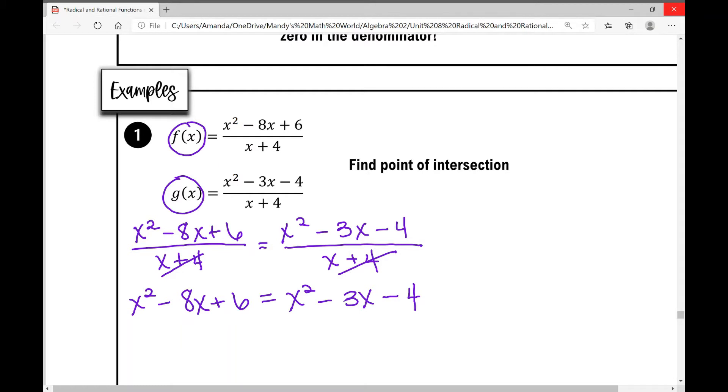So for example, if you had like 6 over 3 equals x plus 1 over 3, you could eliminate the 3s and just do 6 equals x plus 1 to find the value of x. So we're using that same concept with these that just looks a little different.